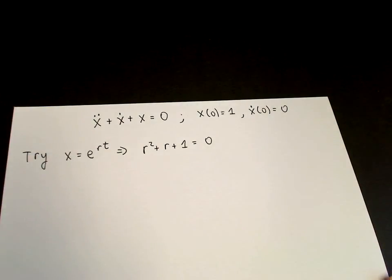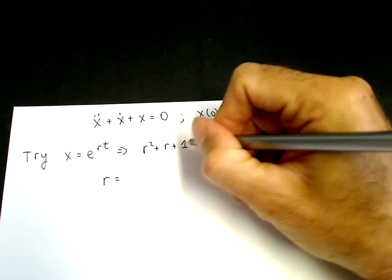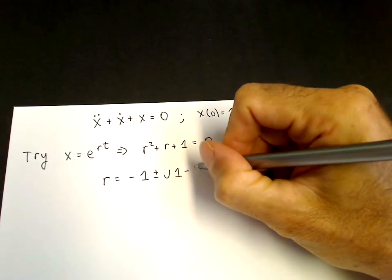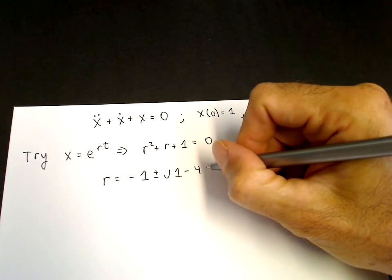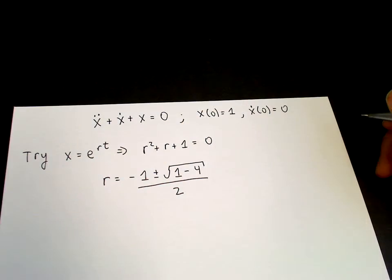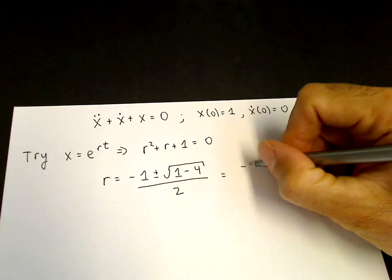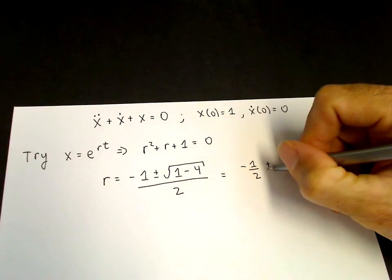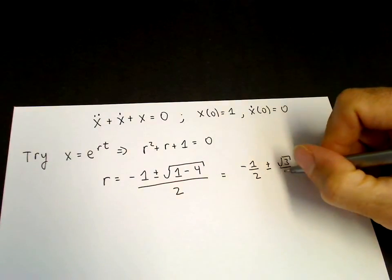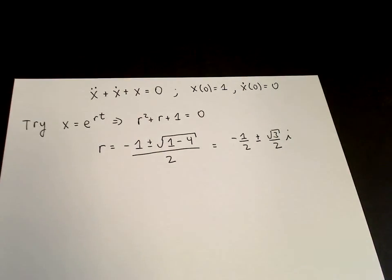We cannot factor that, so we use the quadratic formula: r equals negative 1 plus or minus the square root of 1 minus 4, all over 2. These two roots are minus one half as the real part, plus or minus the square root of minus 3, which becomes root 3 over 2 times i. So we're in the case of complex conjugate roots.